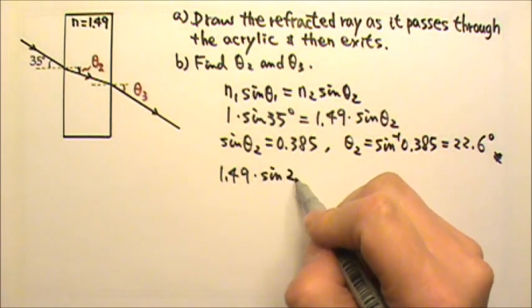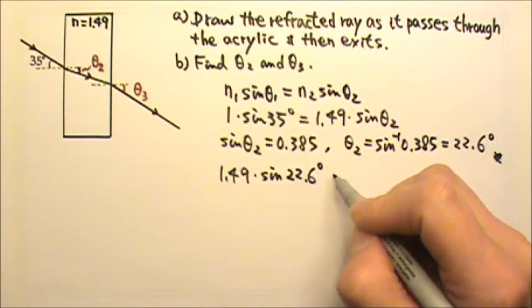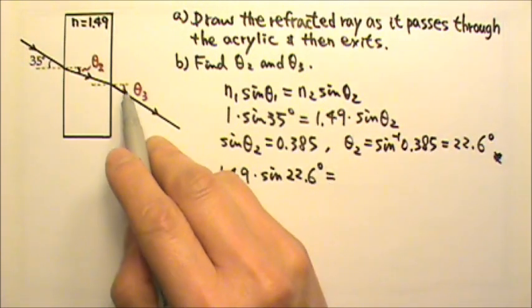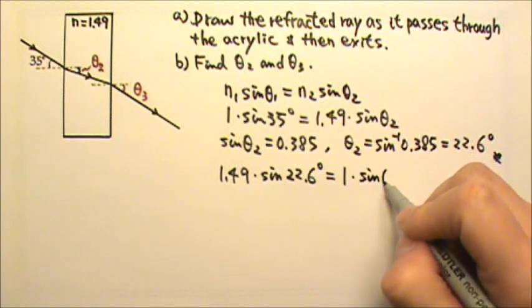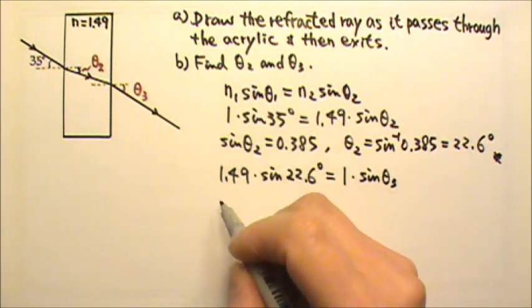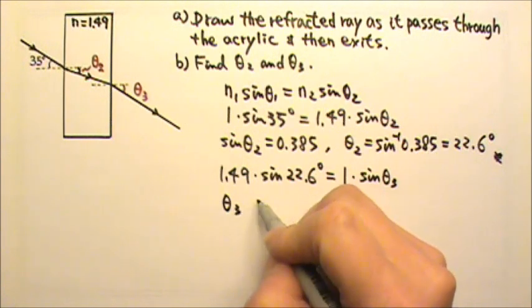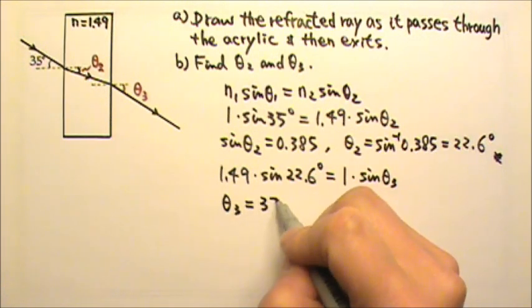So this is sine 22.6 degrees, and that equals the second n, air, times the angle theta 3 we're looking for. And we should find theta 3 to be 35 degrees.